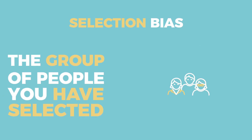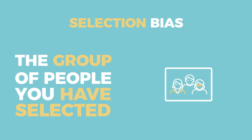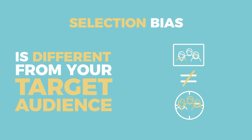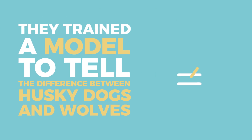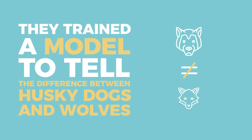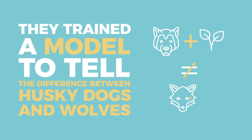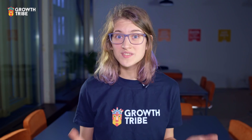Selection bias is when the group of people you selected for your data collection is different from your target audience. Some researchers at the University of Washington wanted to illustrate this point. They trained a model to tell the difference between husky dogs and wolves, but they only selected photos of husky dogs on grass and wolves on snow. The model was obviously very good at detecting snow versus grass, but not wolves versus huskies. Machine learning can feel like magic, but it's definitely not all powerful yet.